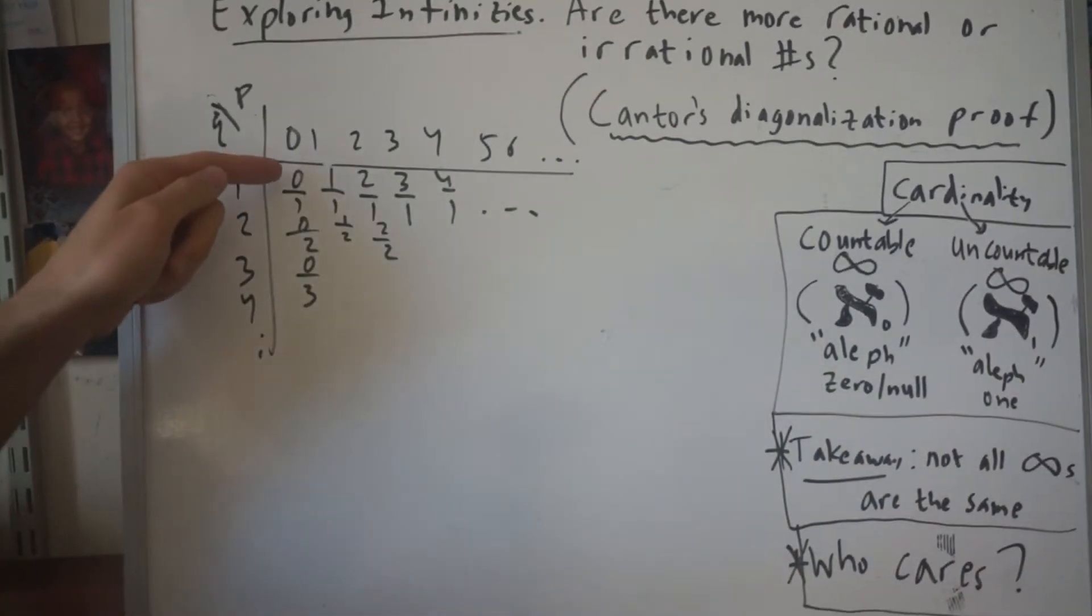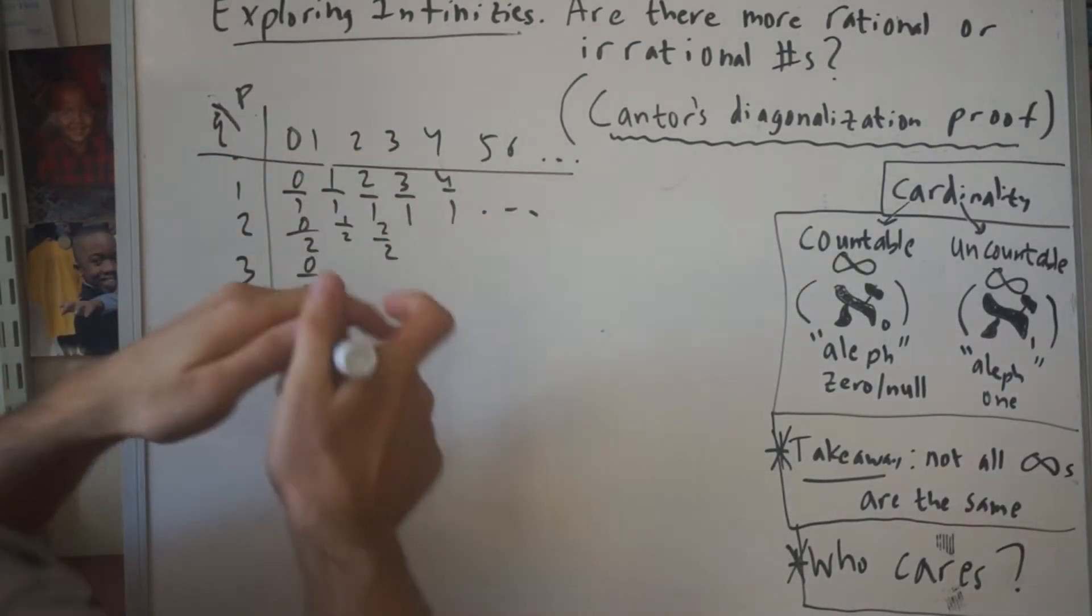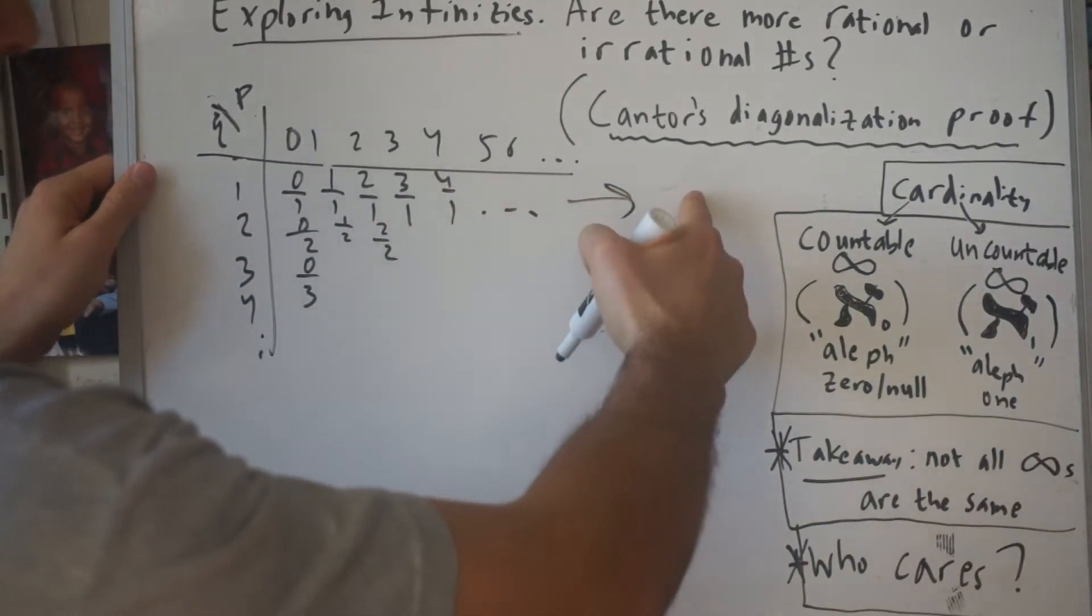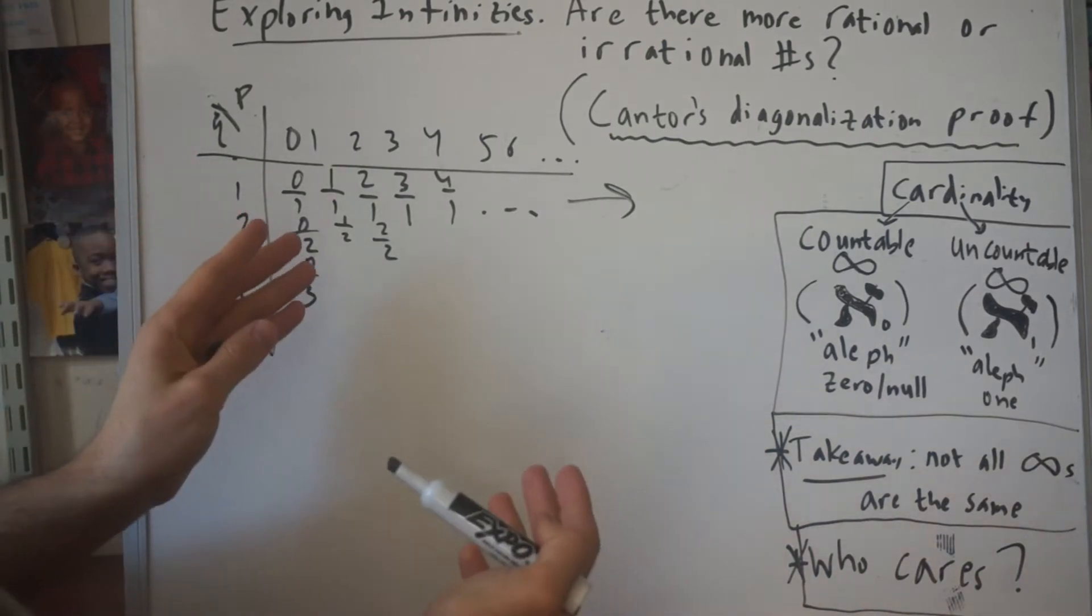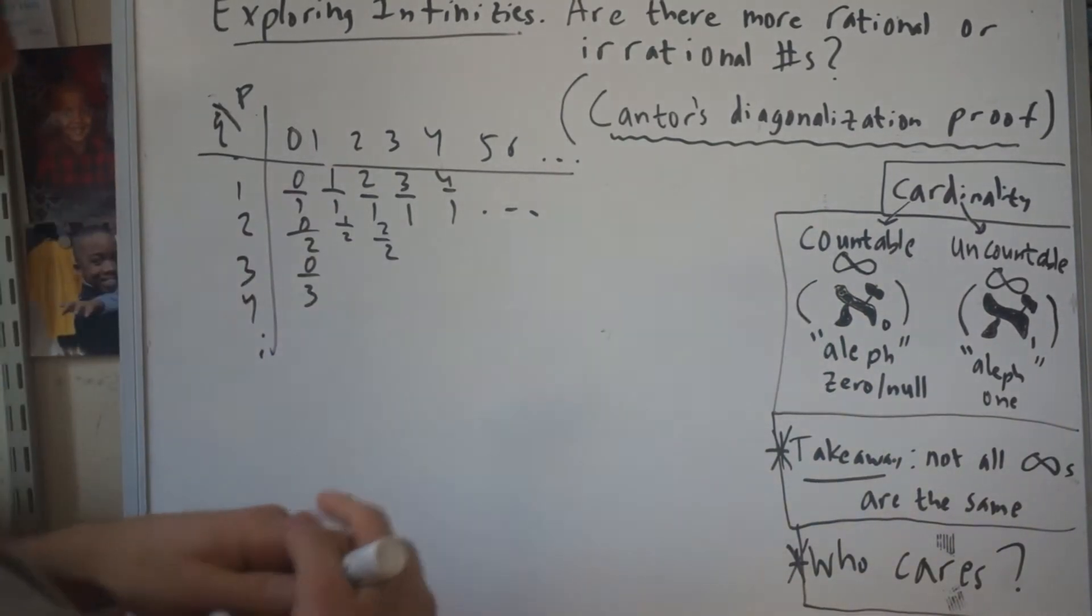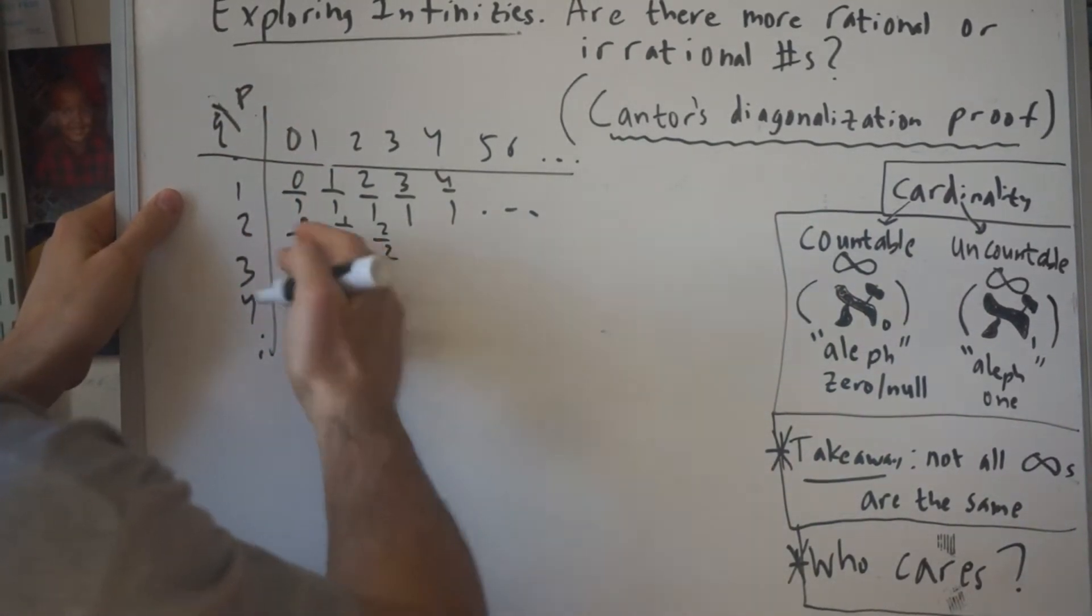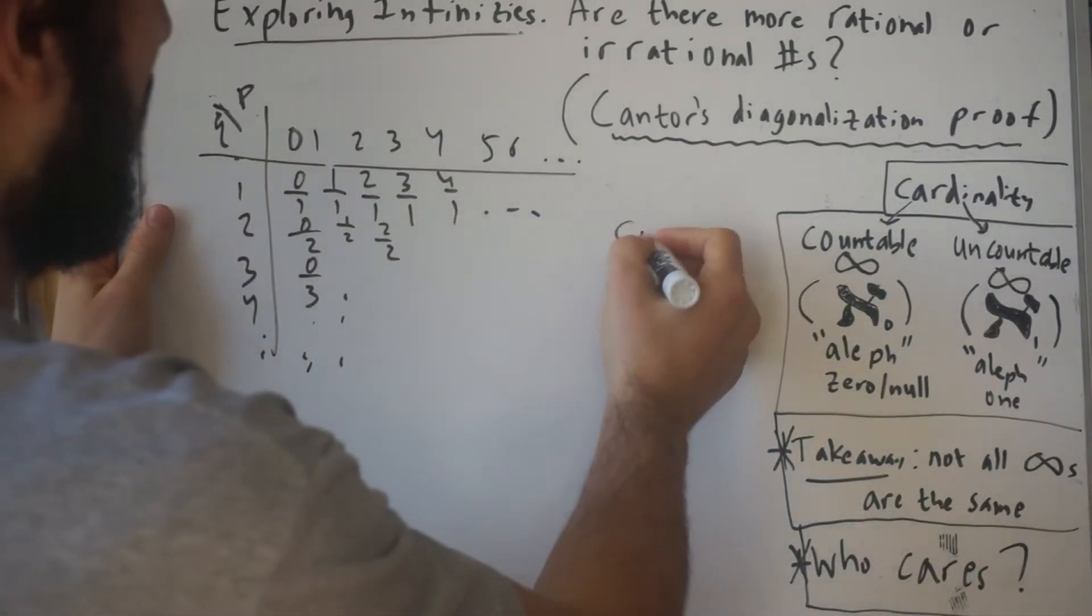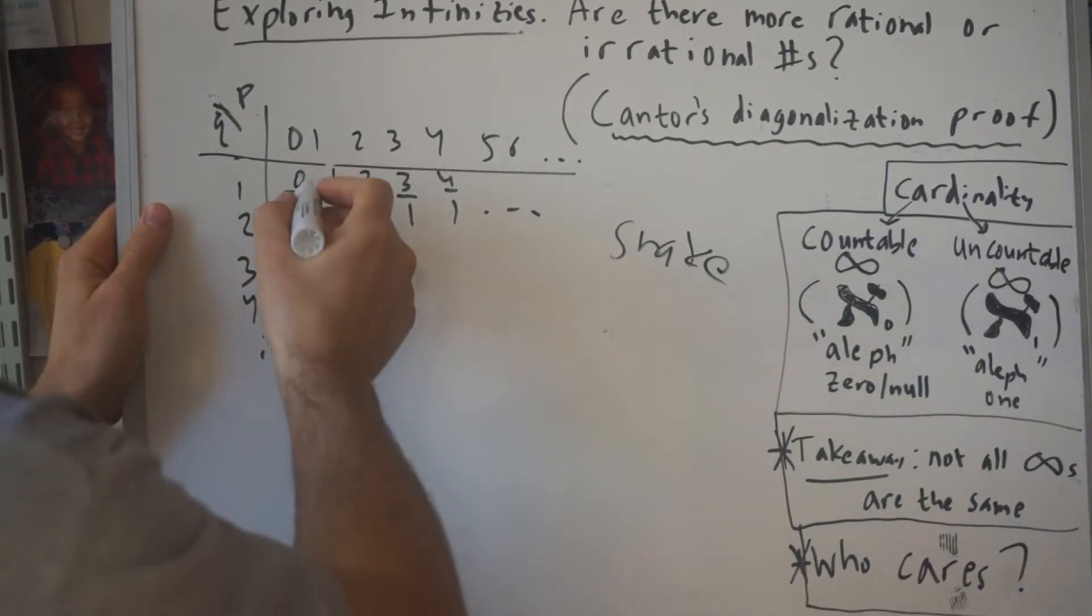Now, what if we wanted to list all of the rational numbers? Here's the first one, here's the second one, here's the third one. There's a little bit of a problem if you just start counting this way. Let's say this is number 1, 2, 3, 4, 5, 6. You're going to go off into this infinite direction and you will never come back and hit these numbers. So that's not going to work.